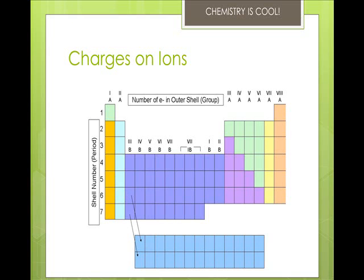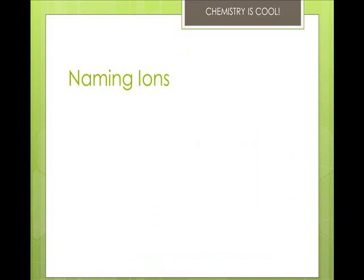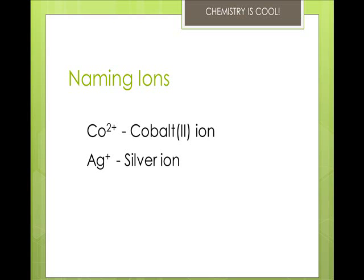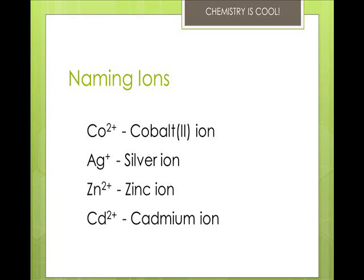For the other elements, we'll cover more of those later. If the charge is always the same — Group A elements — then you just write the name of the metal. For example, Co2+ is the cobalt(II) ion. Ag+ is the silver ion. Zn2+ is the zinc ion. And Cd2+ is the cadmium ion. Most transition metals can have more than one type of charge, and you indicate the charge with Roman numerals in parentheses. A few, like silver, zinc, and cadmium, are transition metals but can only form one kind of ion, so they don't get Roman numerals.